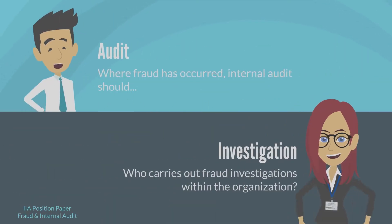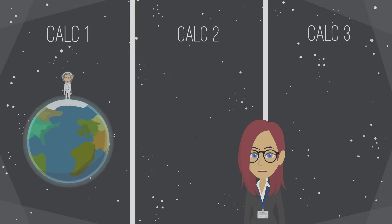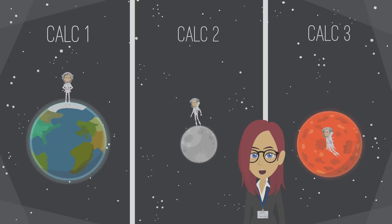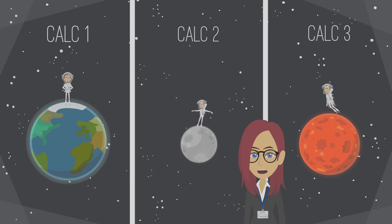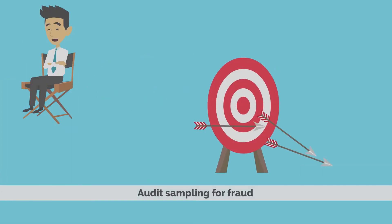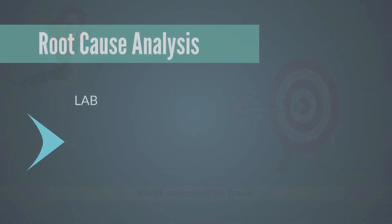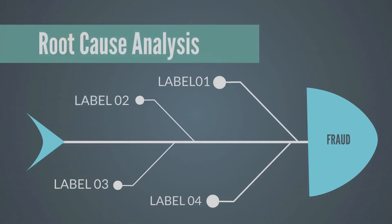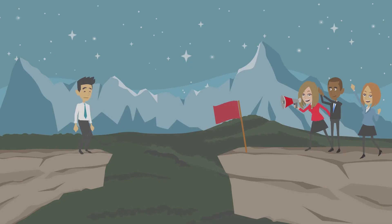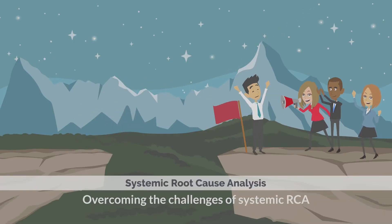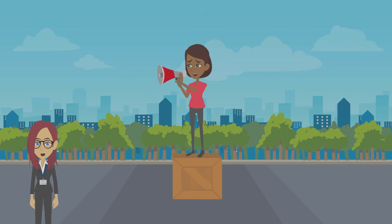Companies still struggle in blurring the line between an audit and an investigation. As auditors, we all know precision is important, but almost no one uses all three of the calculations needed for fraud impact. Is your audit sampling for fraud just missing the mark? Most audit organizations know they need to carry out root cause analysis. However, very few have mastered systemic root cause analysis. Are your risk communications being ignored?